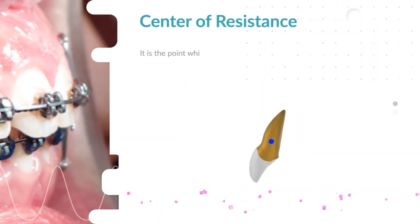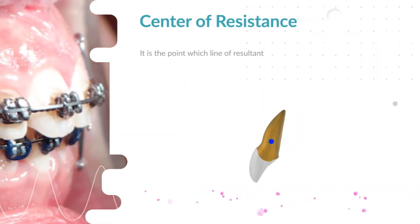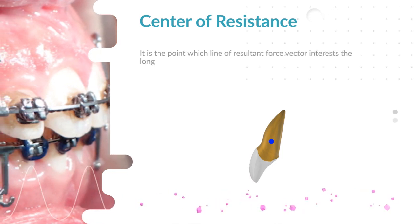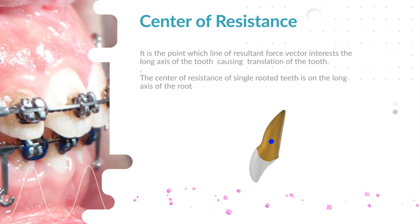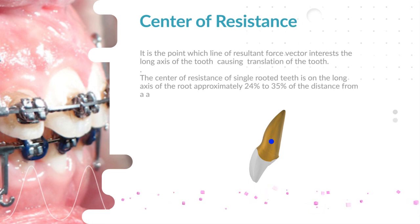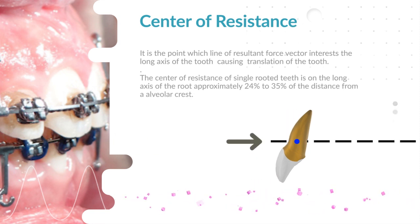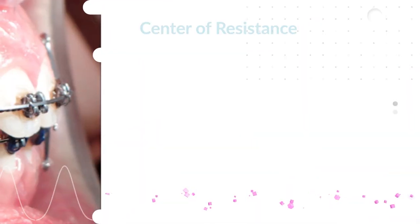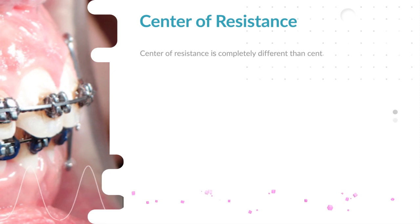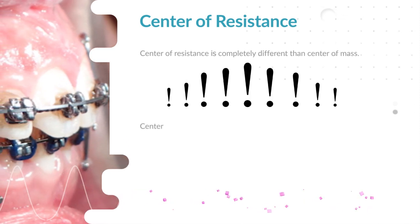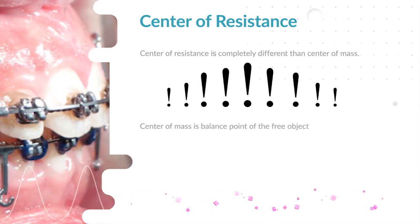Center of resistance: it is a point at which the line of the resultant force vector intersects the long axis of the tooth, causing translation of the tooth. The center of resistance of single-rooted teeth is on the long axis, approximately from 24% to 35% of the distance from the alveolar crest. The center of resistance is completely different from the center of mass. Center of mass is the balance point of a free object in space under the effect of gravity.